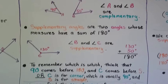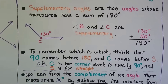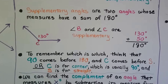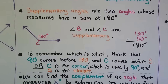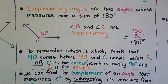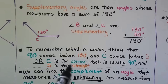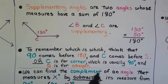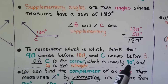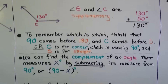To remember which is which: 90 comes before 180, and C comes before S. So C is the 90 (complementary) and S is the 180 (supplementary). You can also think C is for corner — corners are usually 90 degrees, like in a room or a box. And S is for straight — supplementary.